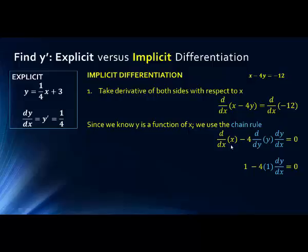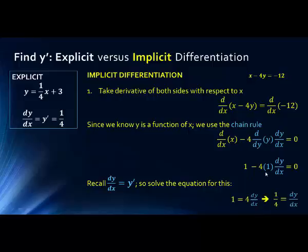The derivative of x is simply 1 minus 4. The derivative of y with respect to y — just like the derivative of x with respect to x — is also 1, and then we have this derivative we're trying to find. We'll use the notation y prime because it makes it a little easier to see. So we have 1 minus 4 dy/dx equals 0. If we add 4 dy/dx to both sides, we get 1 equals 4 dy/dx. Dividing both sides by 4, we get 1 fourth equals dy/dx. Notice that we got the same answer from both the explicit and the implicit formula.